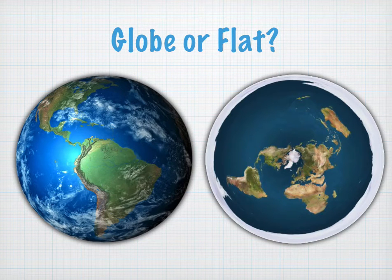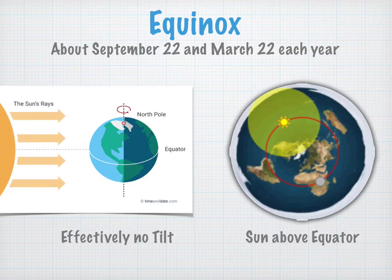So let's take a look at the globe earth model and the flat earth model to see how our data may line up. Remember that on the equinox, on the globe earth model, the earth effectively has no tilt. Whereas on the flat earth model, the sun is simply circling in orbit directly above the equator.